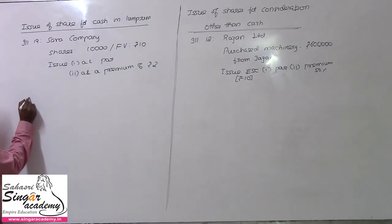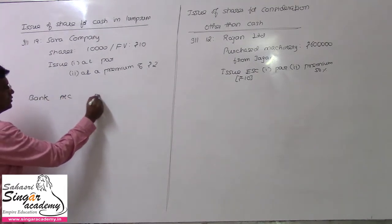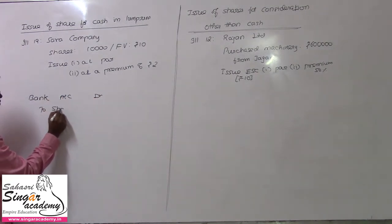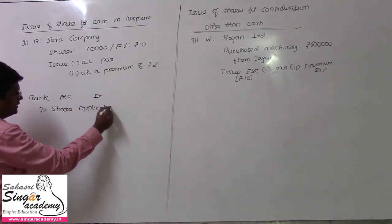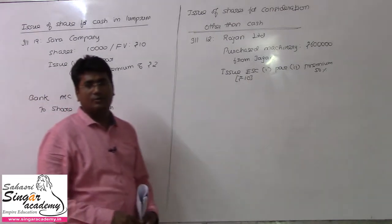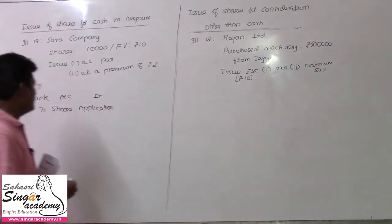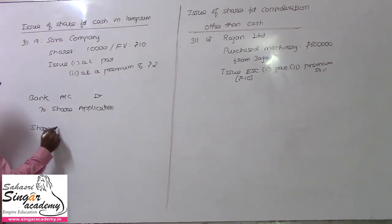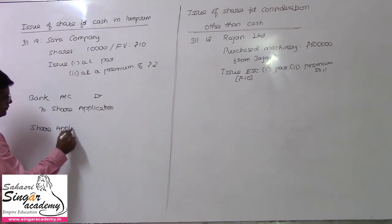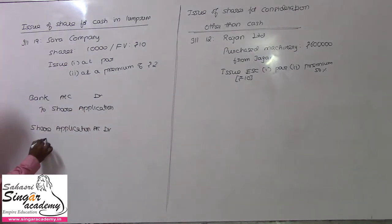Bank account debit — that is the entry on receipt. Bank account debit to share application. Once allotment is confirmed, the share application money moves to share capital. If not confirmed, it is refunded. When confirmed, the entry is: Share application account debit to share capital. That's all.